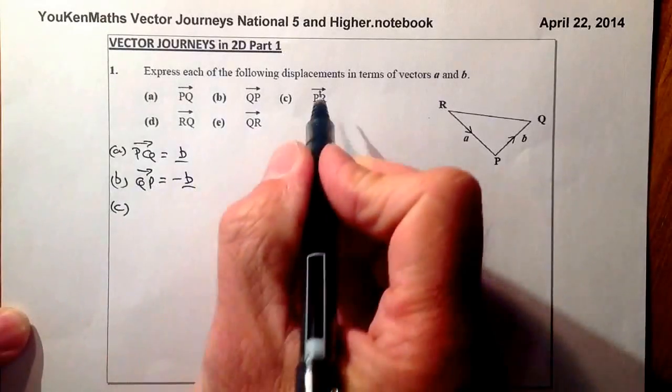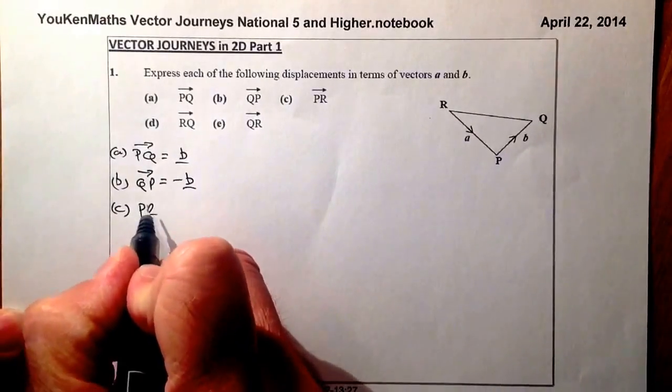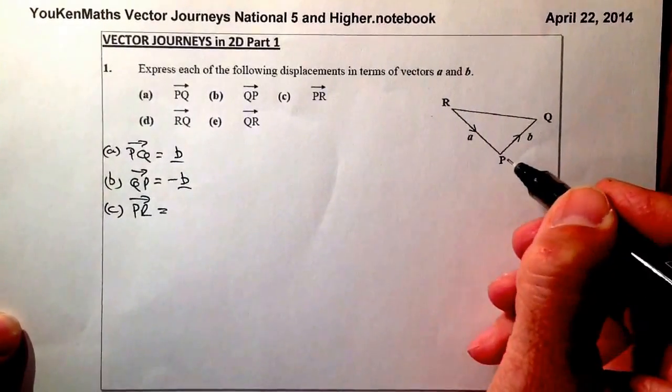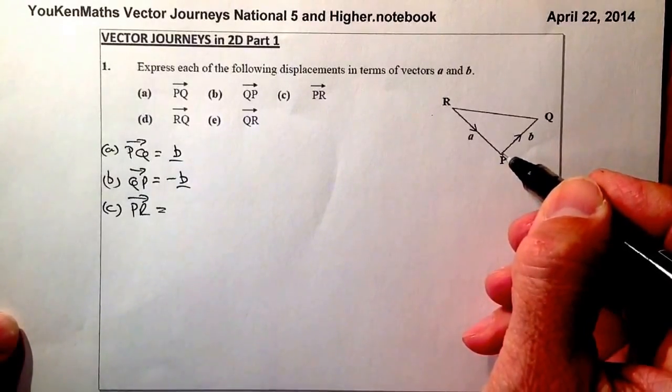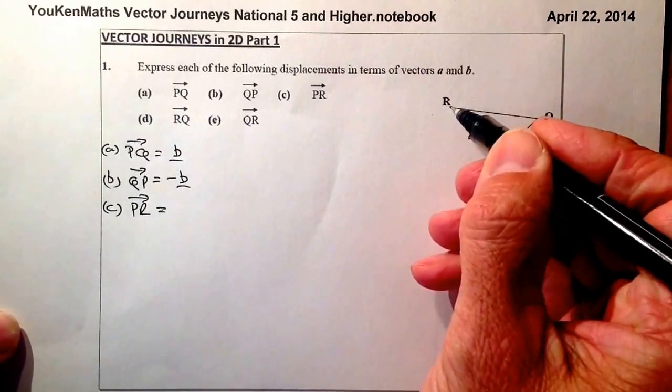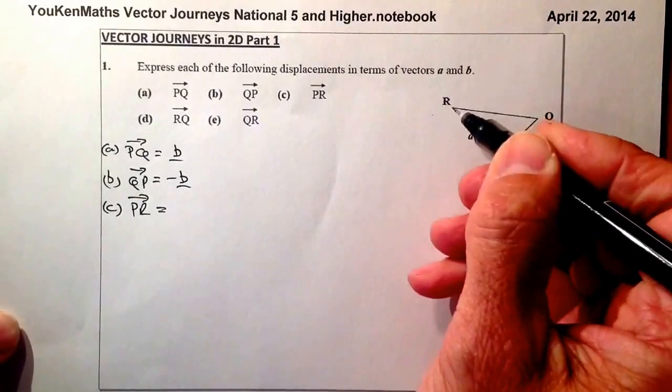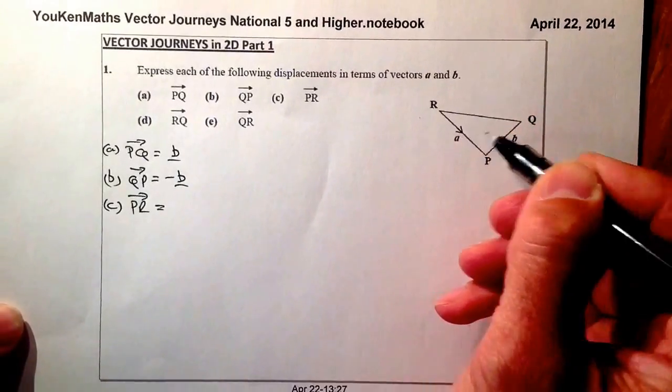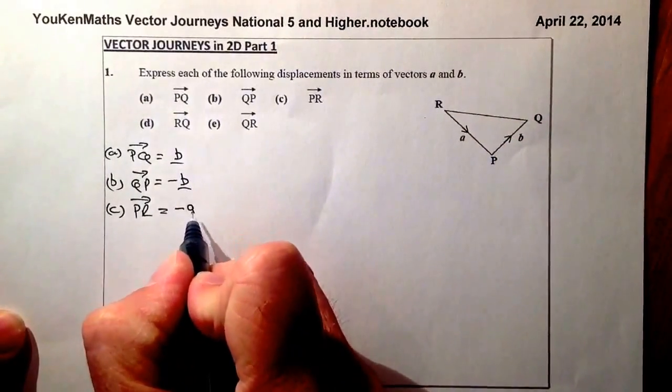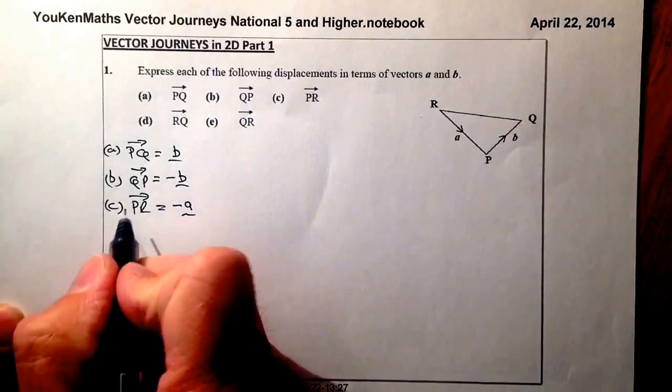Part C, what we're looking at is vector PR. So vector PR is going from this point here to this point here and if I go along in that direction I'm going opposite the vector A, so that's going to be minus A. So quite straightforward in this diagram here.